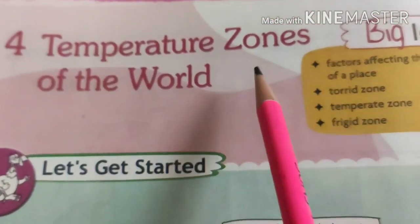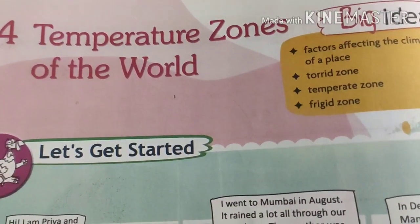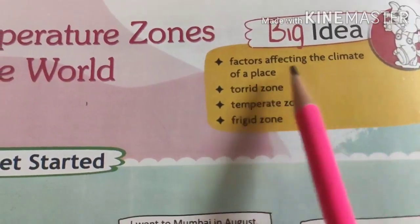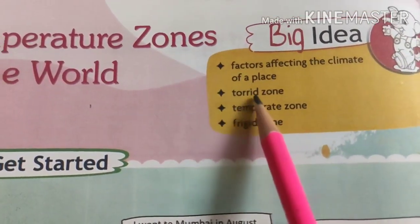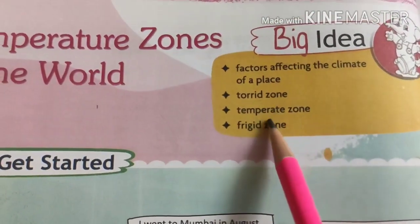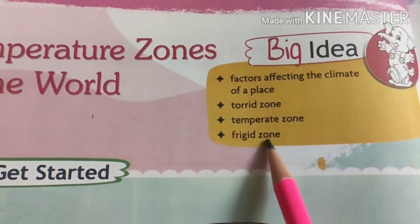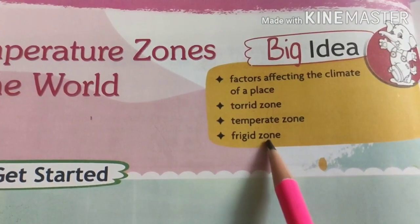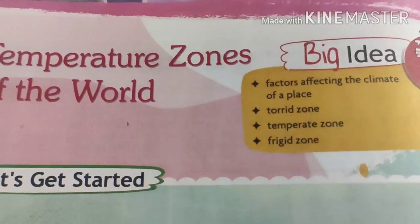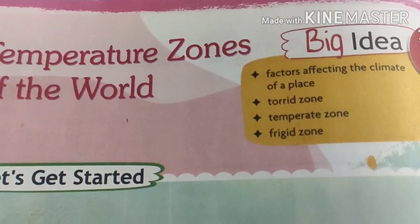This is the second video on the temperate zones of the world. We are going to learn the main factors affecting the climate of a place — the torrid zone, temperate zone, and freezing zone. For these three heat zones, we have to learn the latitudes very clearly. I am Sutapa ma'am, welcome to Edu Logos Mind.